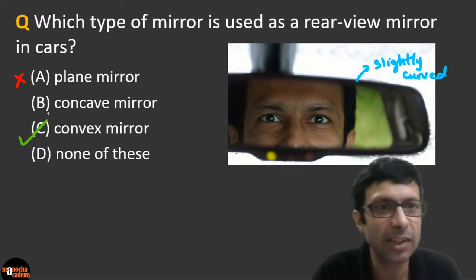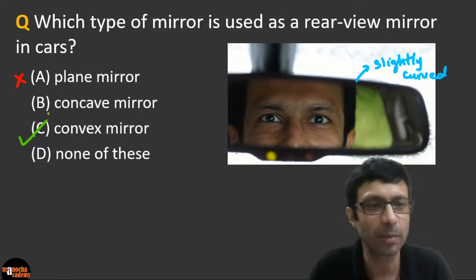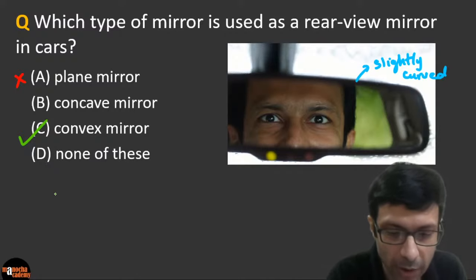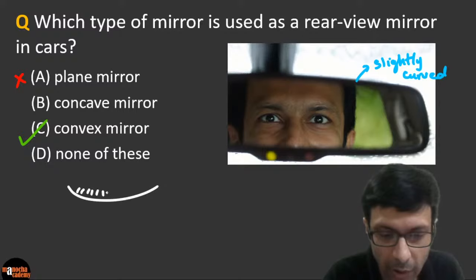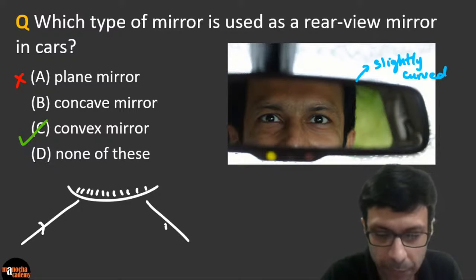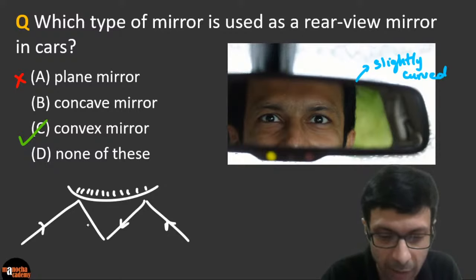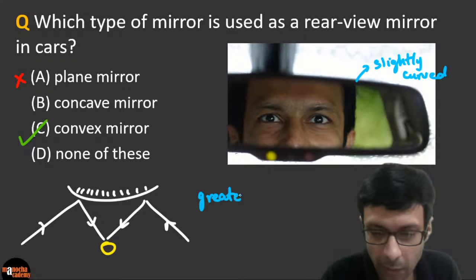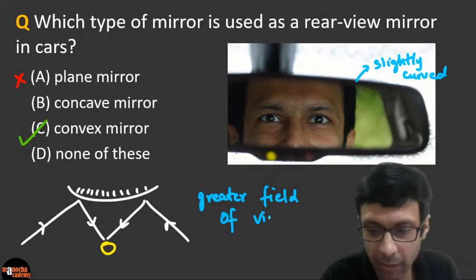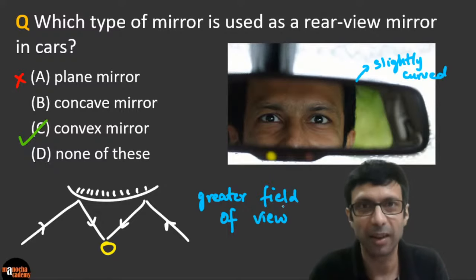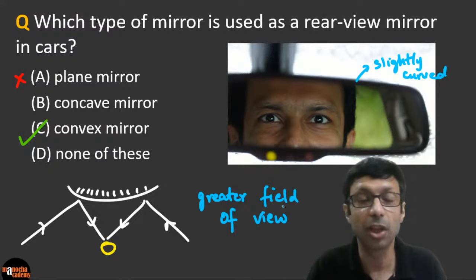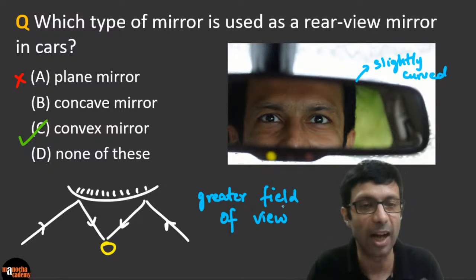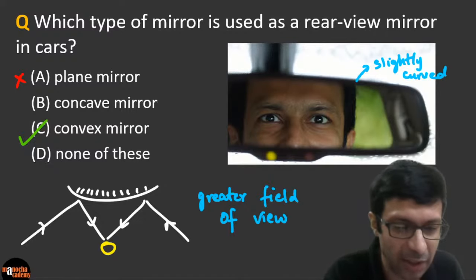The reason we use a convex mirror in the rear view mirror is not magnification — it's the larger field of view. A convex mirror is a diverging mirror, so it gives a greater field of view, allowing you to see more of the road behind you from a larger angle.